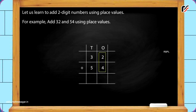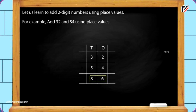First, add the ones. Two plus four is equal to six. Write six under the ones column. Next, add the tens. Three plus five is equal to eight. Write eight under the tens column. Thus, the answer is 32 plus 54 is equal to 86.